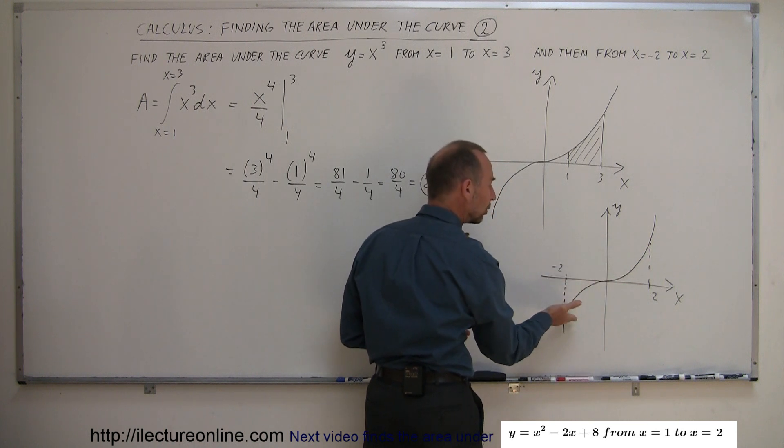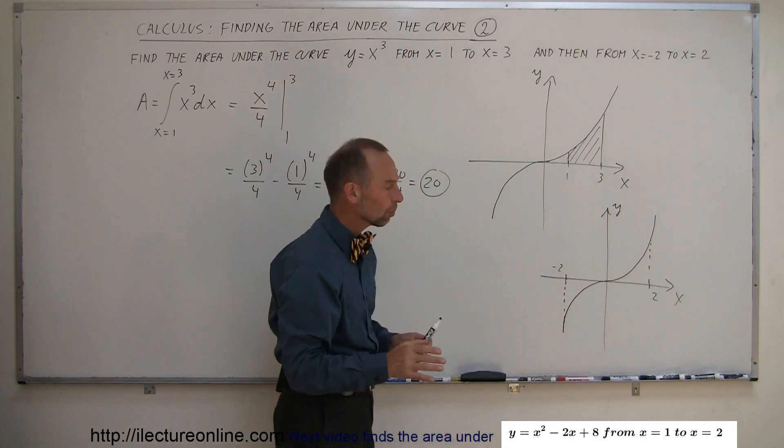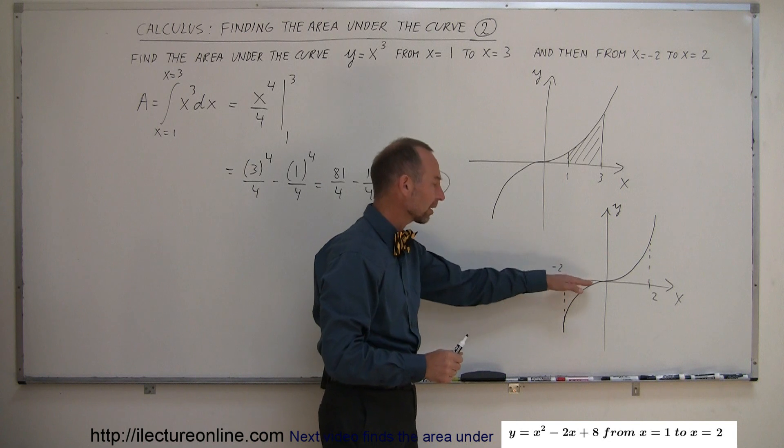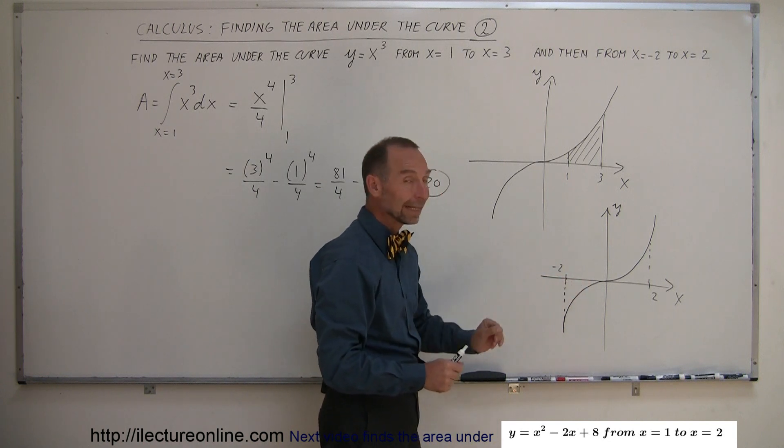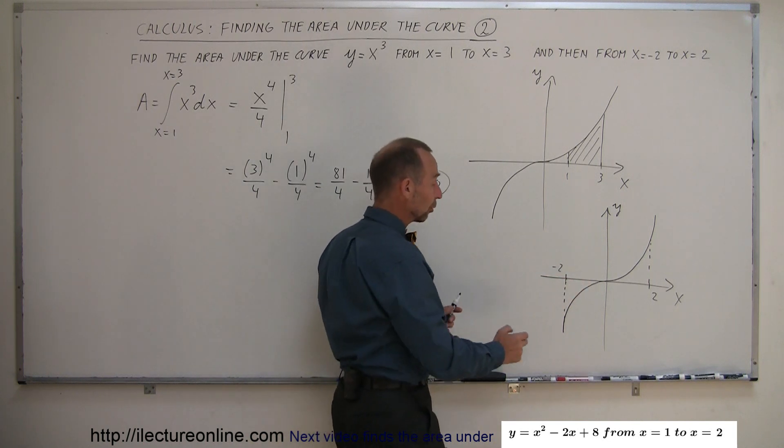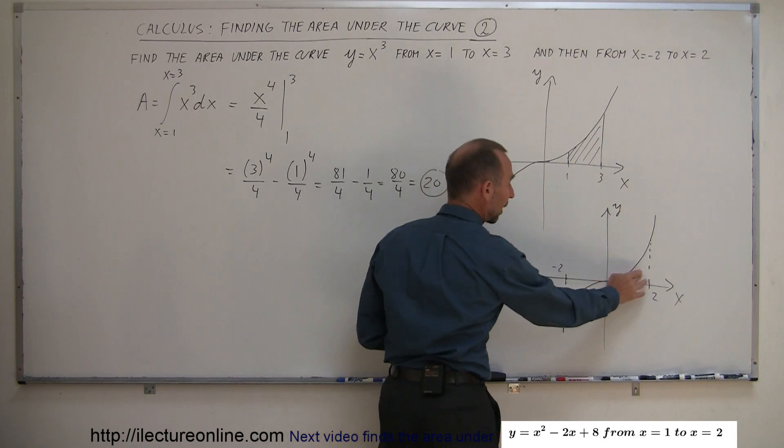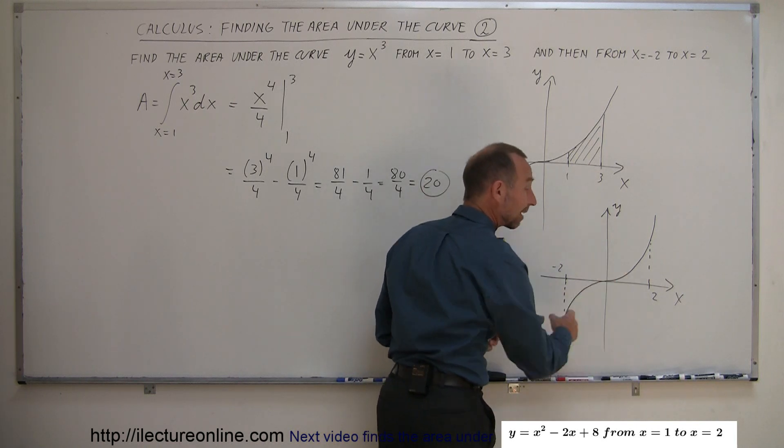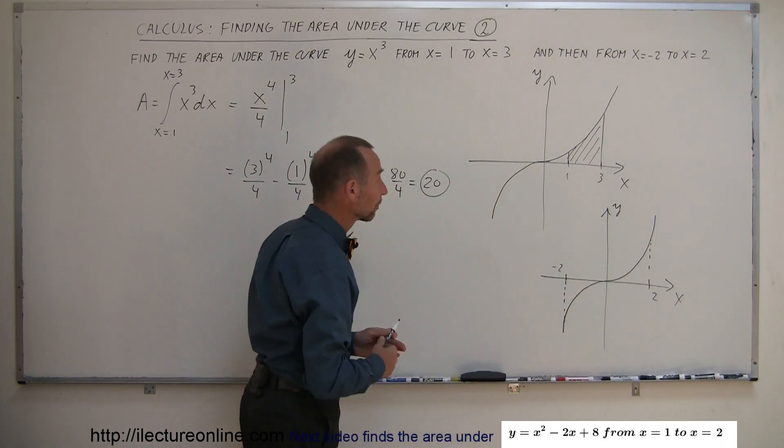But here the area is above the x-axis, here the area is below the x-axis. Whenever the area is below the x-axis, between the curve and the x-axis but below it, the area will be negative. So you're going to get a negative area here, a positive area there, and they'll probably cancel out and get zero.